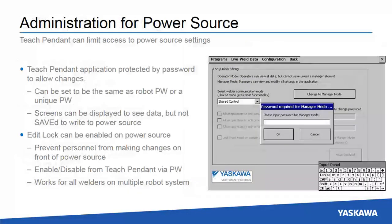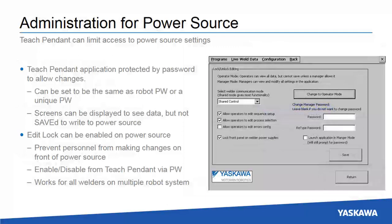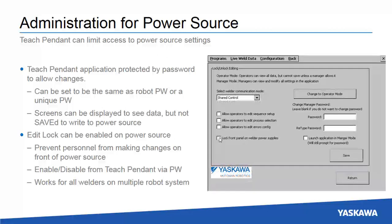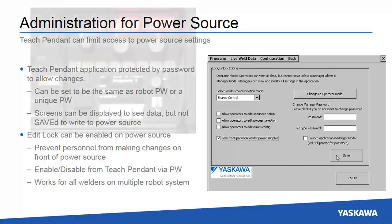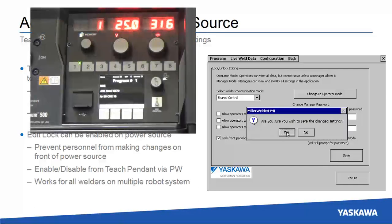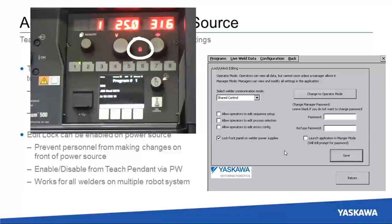People can change things on the power source from the robot — don't freak out. Any changes to the power source settings are password protected. In fact, you can use the robot to administer edit lock on the power source to prevent personnel from changing settings on the front of the welder.